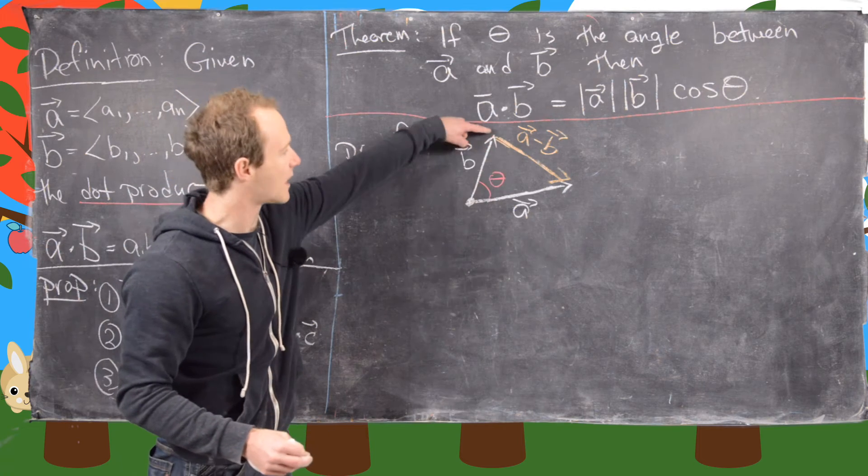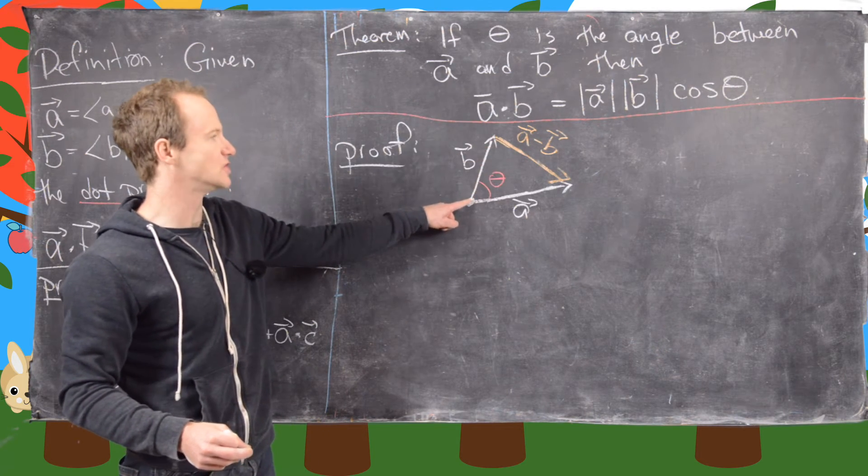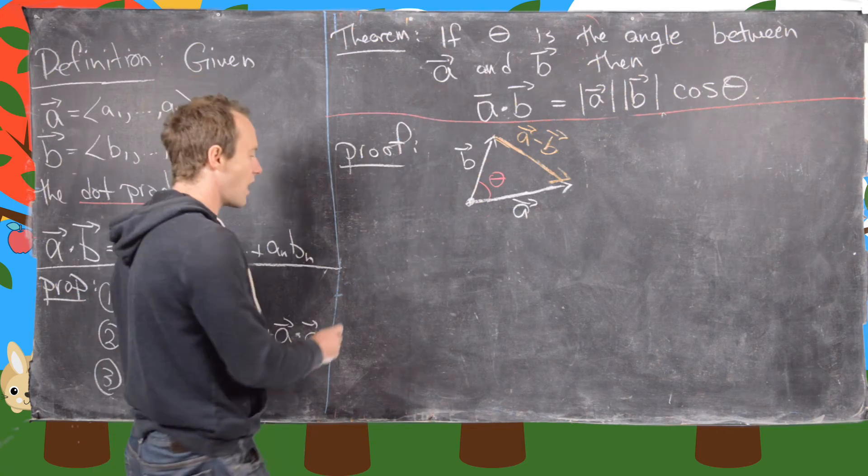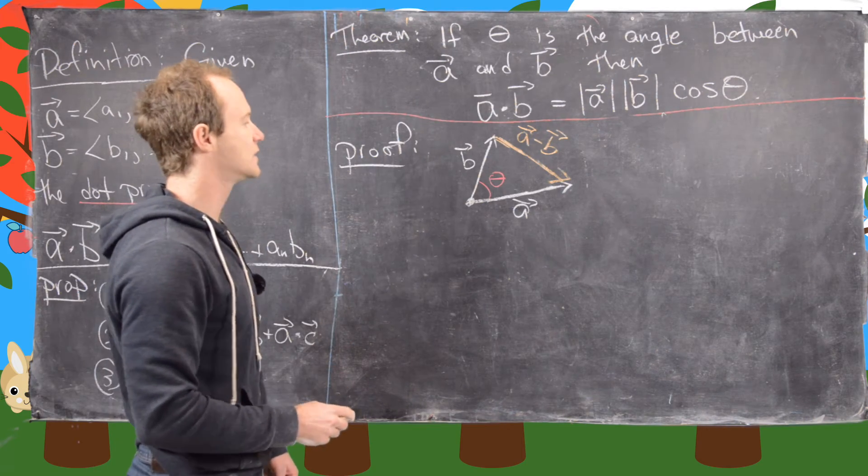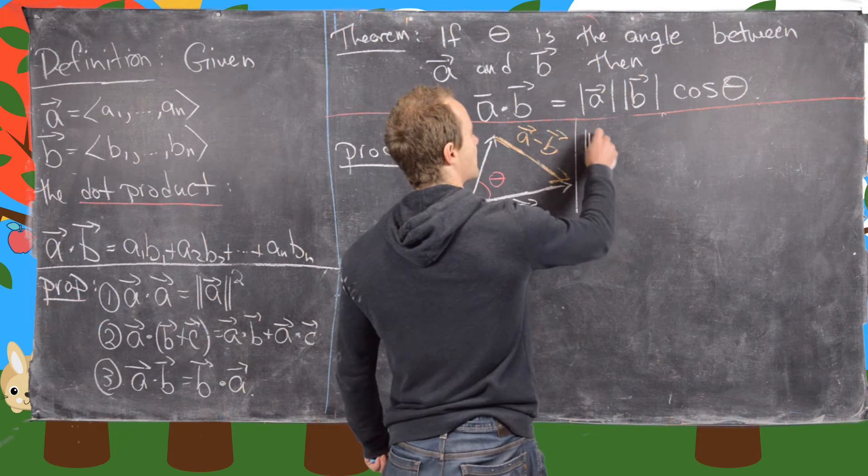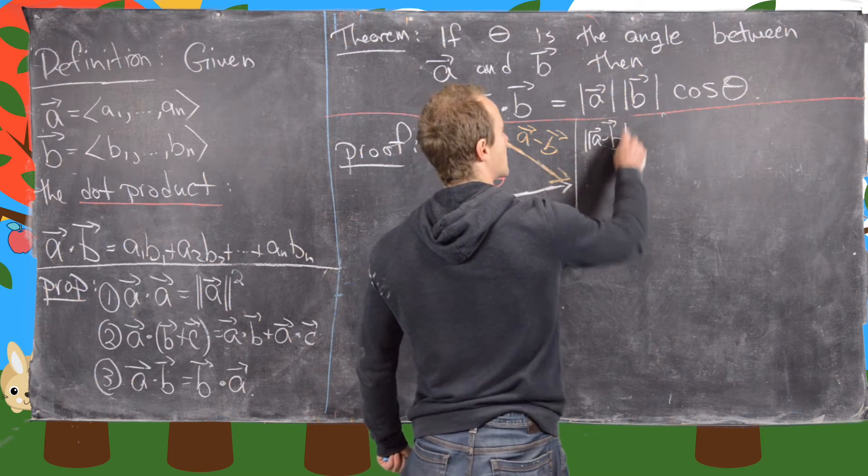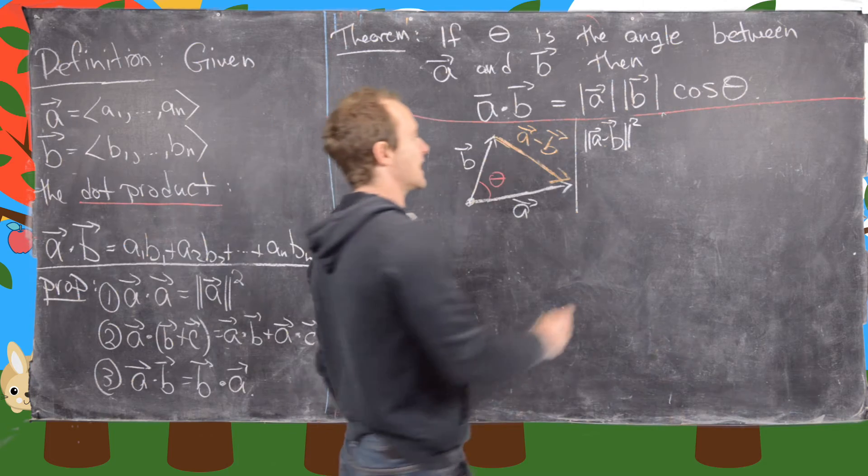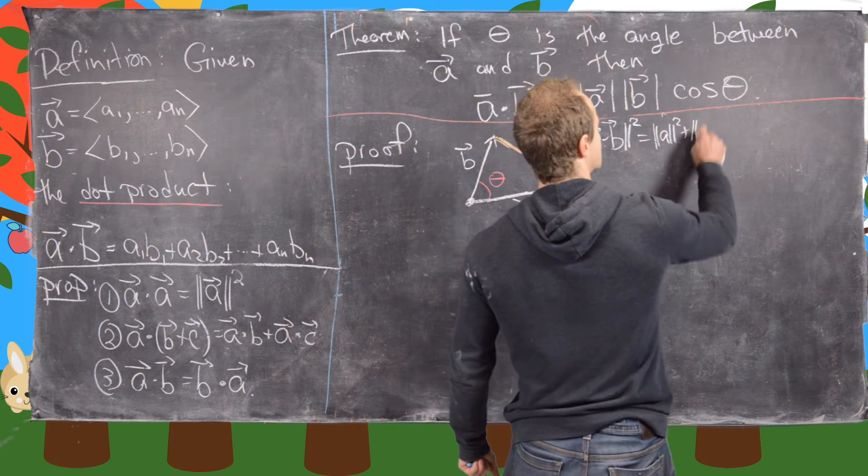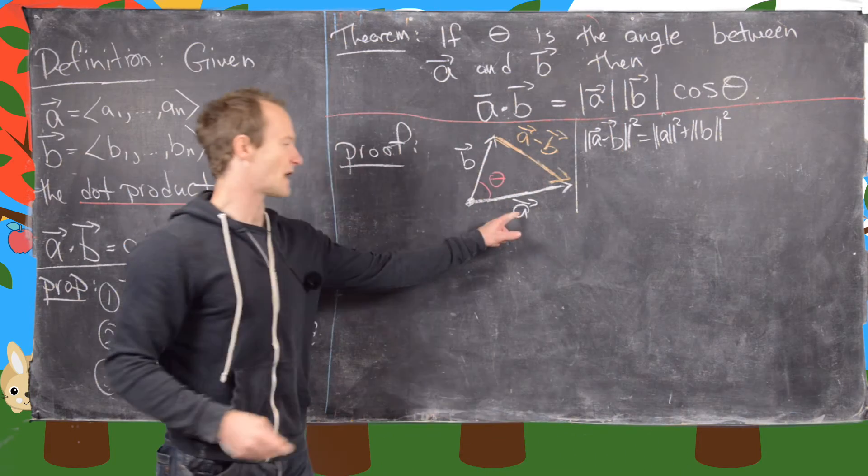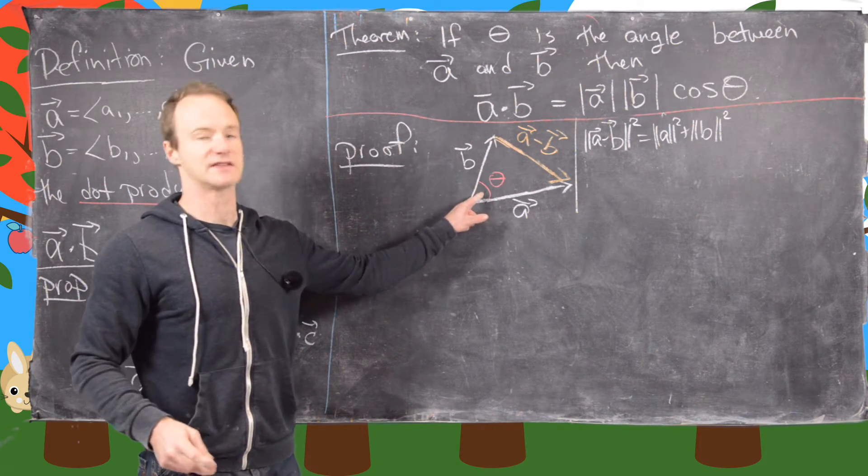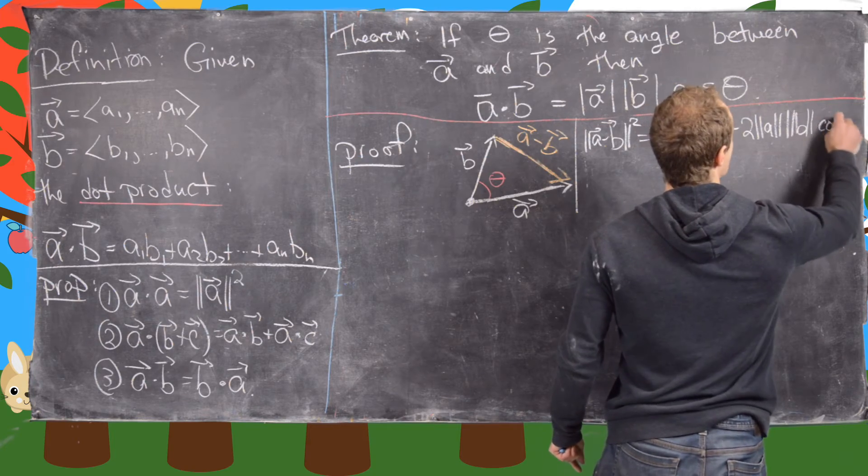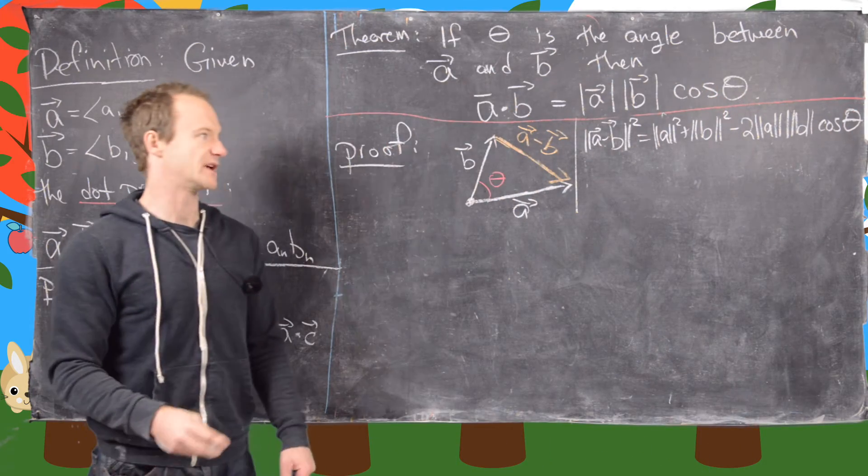And this vector right here is the vector A minus the vector B. So how can we see that? Well, minus B will take us from the terminal point of B to the origin, and then plus A will take us to the terminal point of A. And now we're going to apply the law of cosines to this. So the law of cosines will give us the length of A minus B squared, so that's the side opposite this angle, is equal to the length of A squared plus the length of B squared, so that would be the two rays that are defining this angle, minus twice length of A times length of B times cosines theta. Okay, so that's what we get.